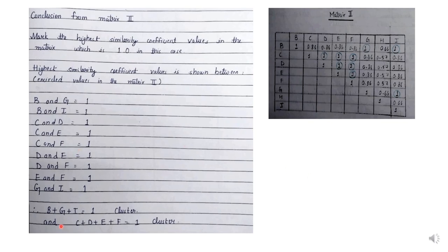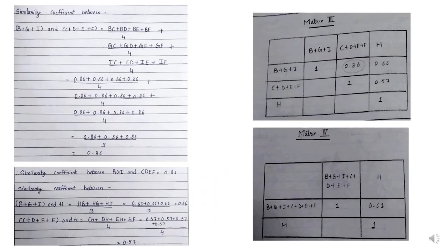From the calculations, the major conclusion is that B, G, I is one cluster and C, D, E, F is another cluster. Now we will calculate the similarity coefficient between these two major clusters. Our major clusters are B, G, I and C, D, E, F. We will calculate the similarity coefficient between them and make matrix 3.